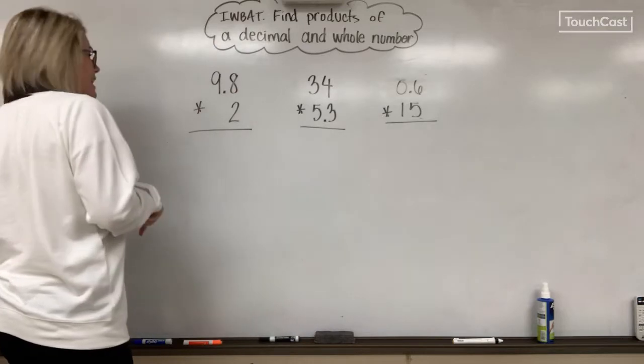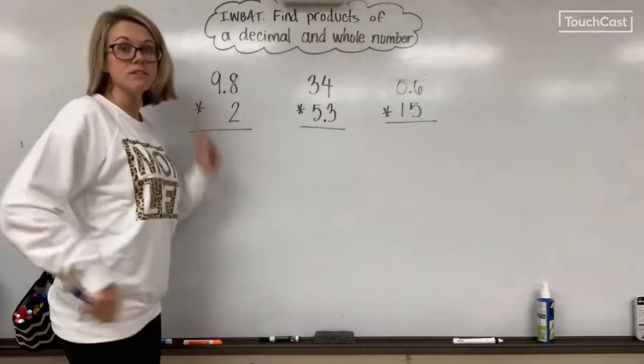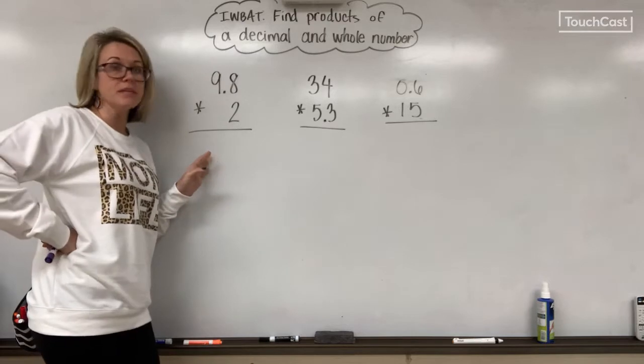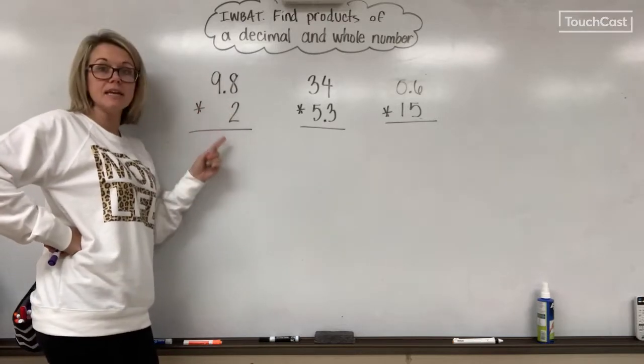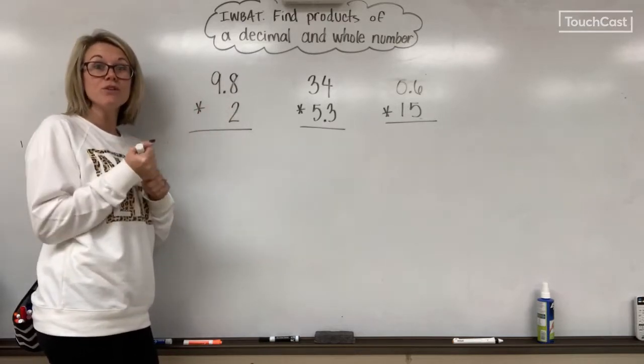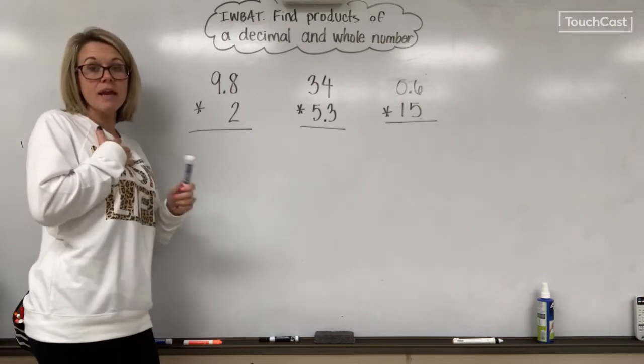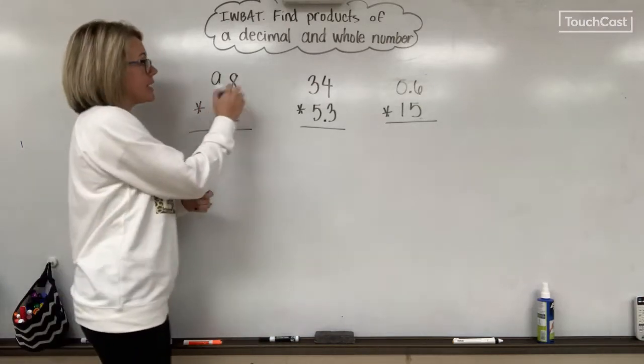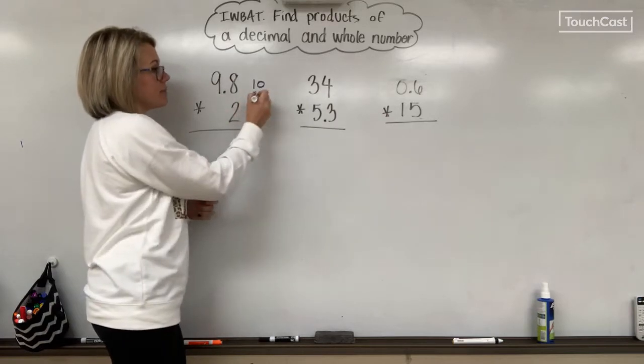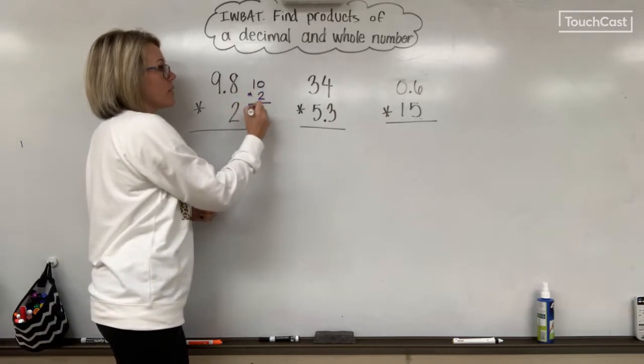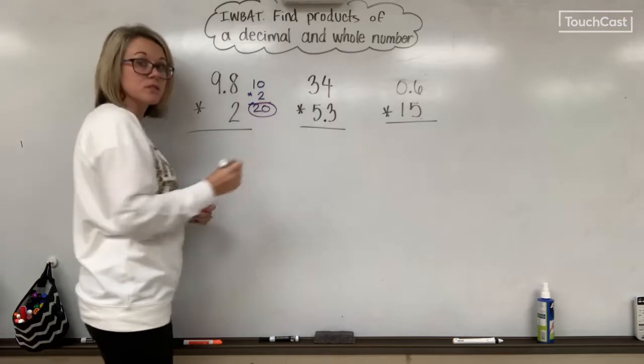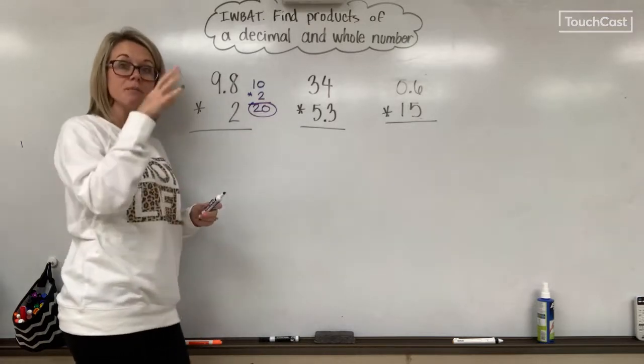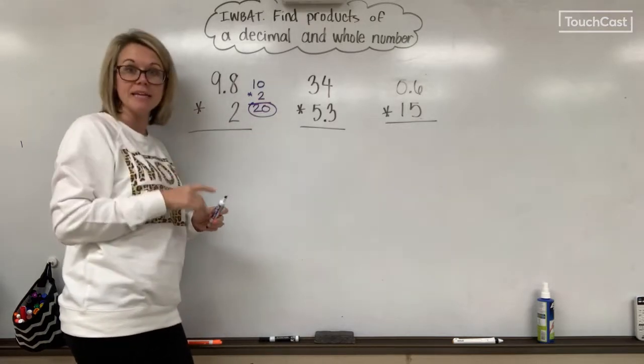I'm going to go with purple. I've got three problems here. We're going to work through these. So I have 9.8 times 2. First, I want to estimate because that's going to help me figure out where to place my decimal. I know that 9.8 is really close to 10. I'm going to keep 2 the same. So I know my answer should be close to 20. It's probably going to be a little less because I rounded 9.8 up.